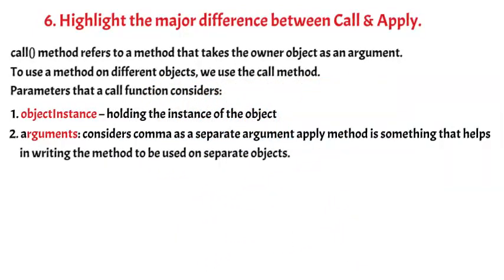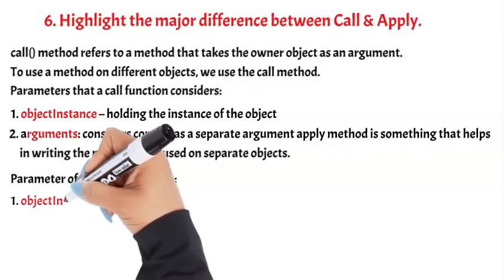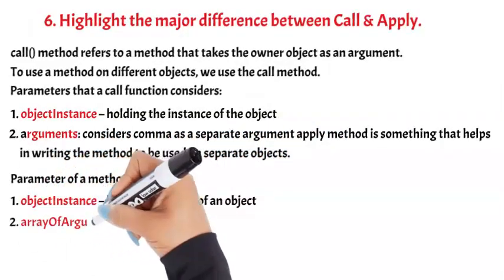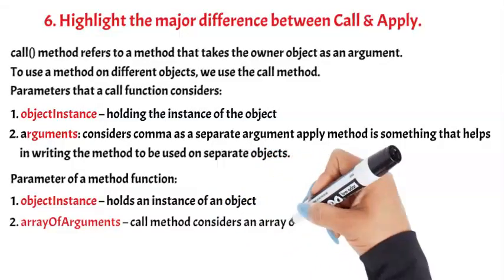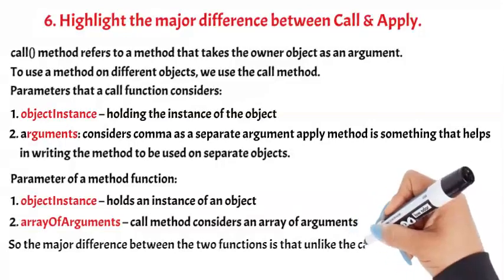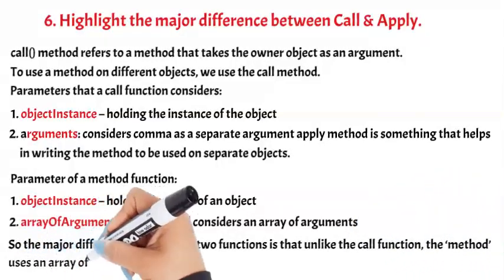Apply method is something that helps in writing the method to be used on separate objects. Parameters of apply method function: 1. Object instance, holds an instance of an object. 2. Array of arguments. Apply method considers an array of arguments. So the major difference between the two functions is that unlike the call function, the apply method uses an array of arguments.